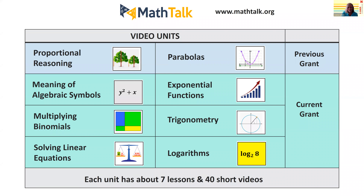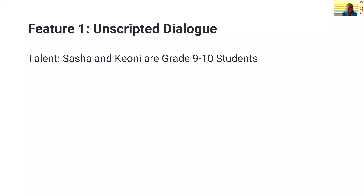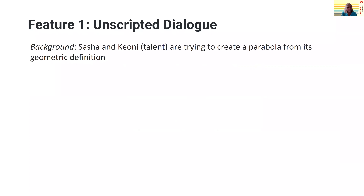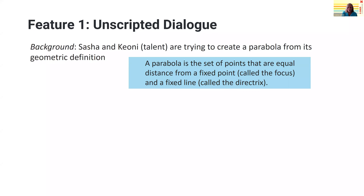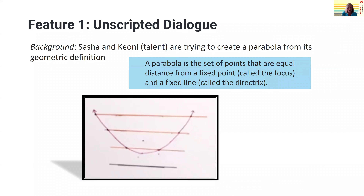I'd like to introduce our videos by focusing on two features. First is the unscripted dialogue. I'm going to show you two video clips from these two students — we call them the talent. Sasha and Keone were grade 9-10 students, and they're working on a task in which they're trying to create a parabola from its geometric definition: a parabola is a set of points that are equidistant from a fixed point called the focus and a fixed line called the directrix. To solve this task, you need to create a focus and a directrix, then find ways to place points that are the same distance to the focus as they are to the directrix. I'm superimposing the final correct solution that Sasha and Keone eventually came to, but they started out with a lot of false starts and confusion.